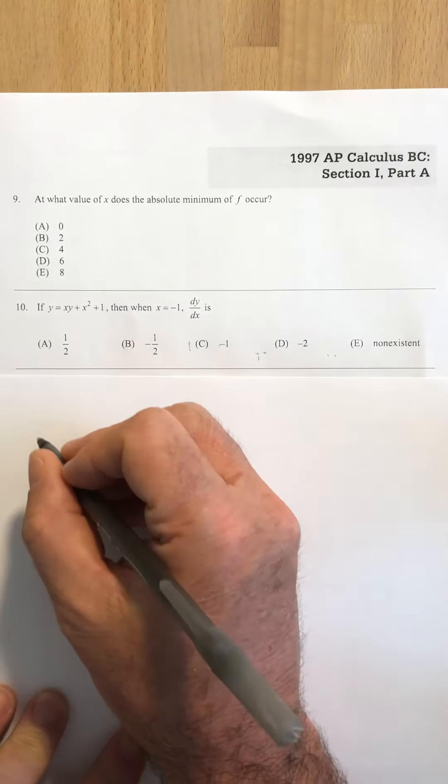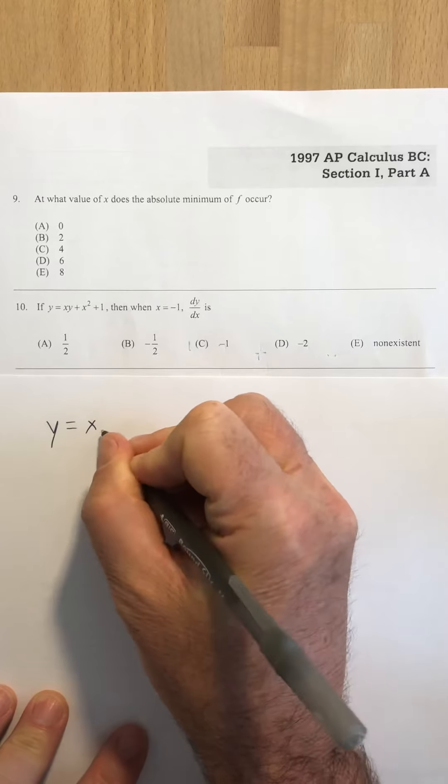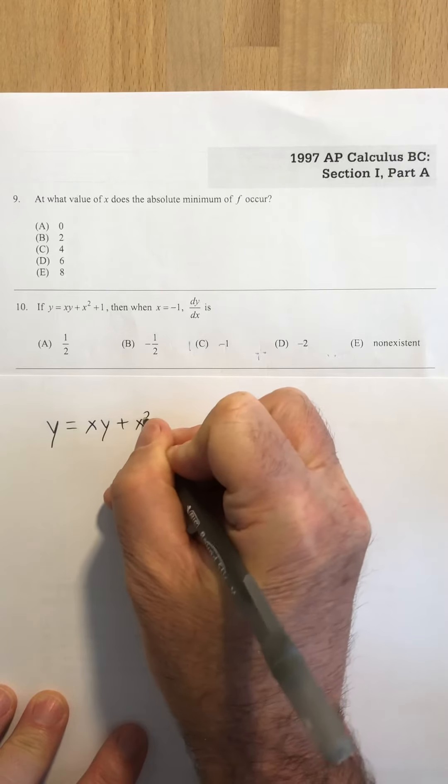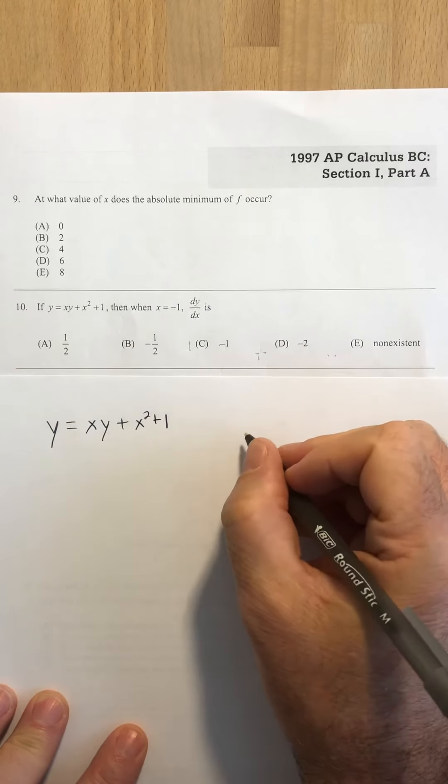All right, number 10 is an implicit function, and it asks us to differentiate that function at x equals negative 1.